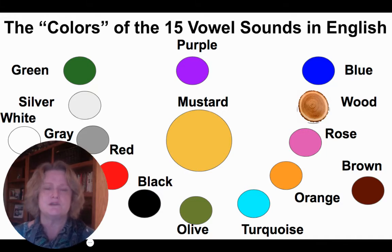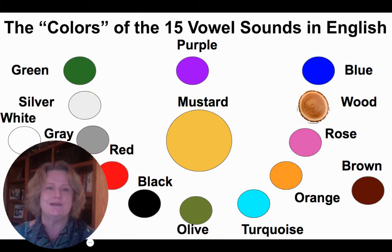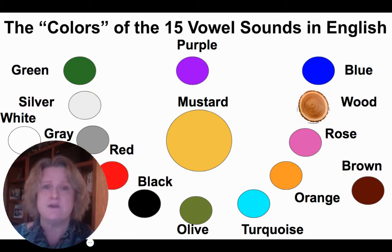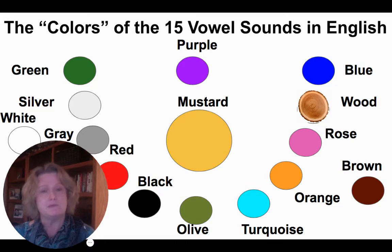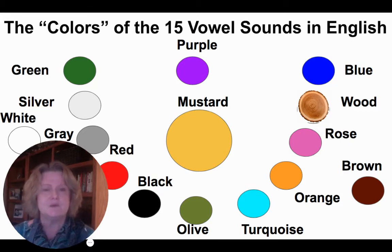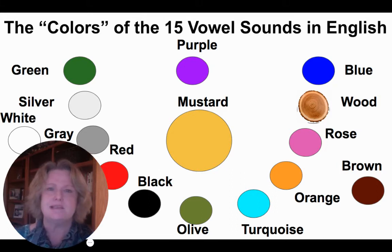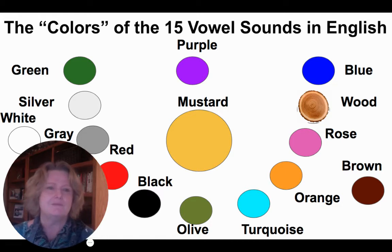Rose starts with O and then goes to W. Orange is usually O plus an R — door. Some people might say 'orange' differently, but most people say 'door.' It depends a little on your accent. Turquoise has the sound OY in it, and brown has the sound OW.